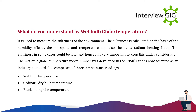What do you understand by wet bulb globe temperature? It is used to measure the sultriness of the environment. Sultriness is calculated based on humidity effects, airspeed, temperature, and the sun's radiant heating factor. In some cases sultriness could be fatal, making it important to keep it under consideration. The wet bulb globe temperature index was developed in the 1950s and is now accepted as an industry standard. It comprises three temperature readings: wet bulb temperature, ordinary dry bulb temperature, and black bulb globe temperature.